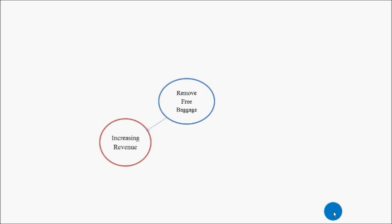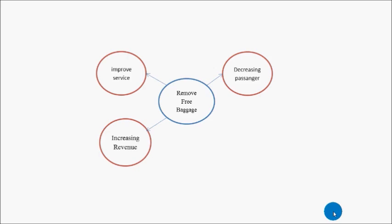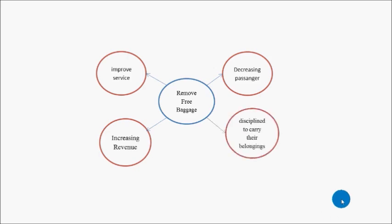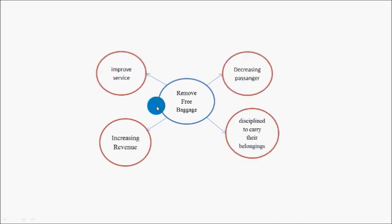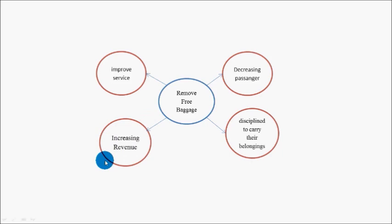Second, identify direct first order consequences. There are direct consequences: increasing revenue, decreasing passengers, improved service, and passengers will be disciplined to carry their belongings. Third, identify indirect second order consequences.